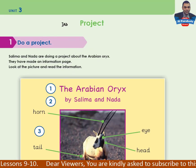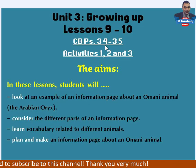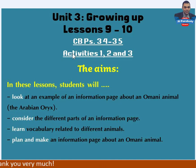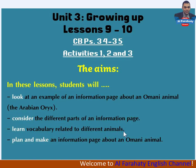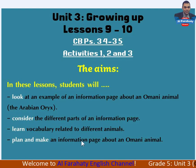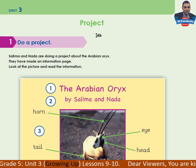What are the aims of these two lessons? Unit 3 'Growing Up', lessons 9 and 10. Classbook pages 34 and 35, activities 1, 2 and 3. The aims: in these lessons students will look at an example of an information page about an Omani animal, consider the different parts of an information page, learn vocabulary related to different animals, plan and make an information page about an Omani animal, and do a project.